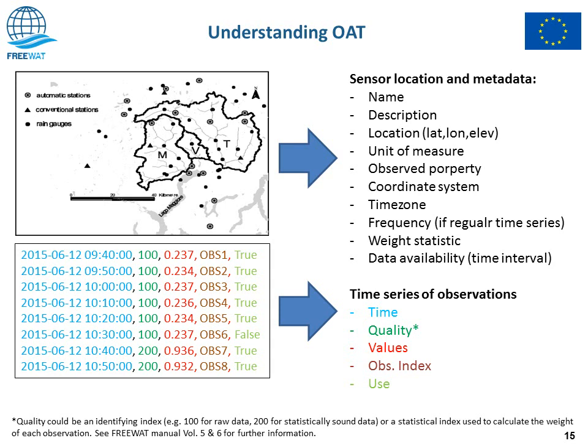Regarding the sensor location and metadata, we have the name of the sensor — which should be unique within your project — a description, a location, a unit of measure, the observed property, a coordinate system, the timezone of the data, the frequency if the service is regular, some weight for composing statistics and data analysis, and data availability which is basically the interval of observations — the begin and end position.